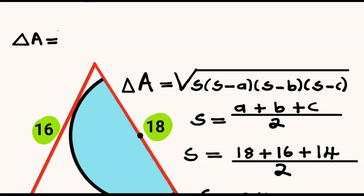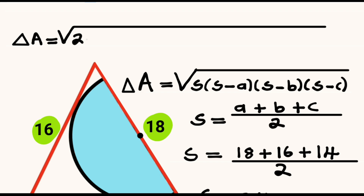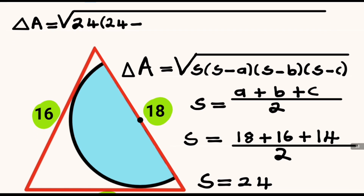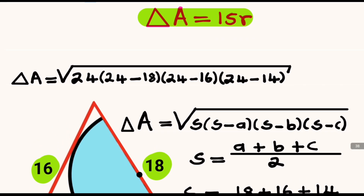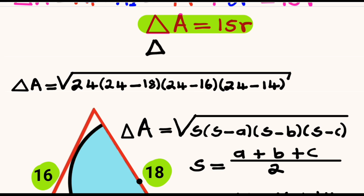We substitute, so the area of the triangle equals the square root of S which is 24, multiplied by S minus A which is 24 minus 18, multiplied by S minus B which is 24 minus 16, multiplied by S minus C which is 24 minus 14. The area of this triangle using Heron's formula equals 48 multiplied by the square root of 5.